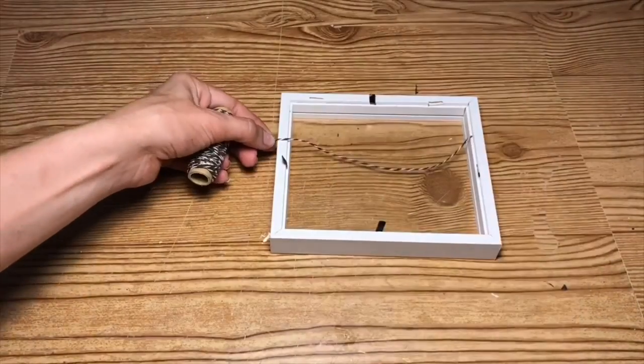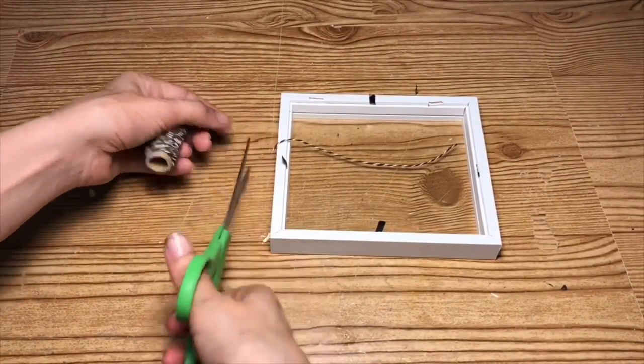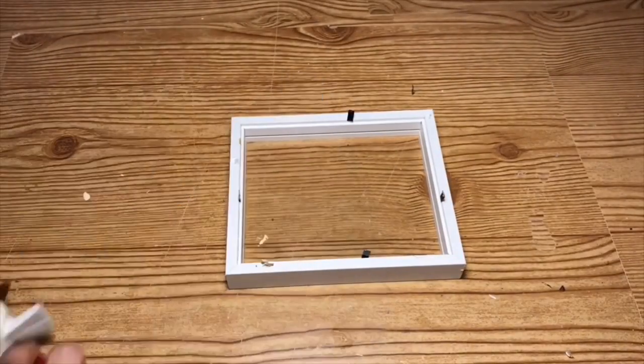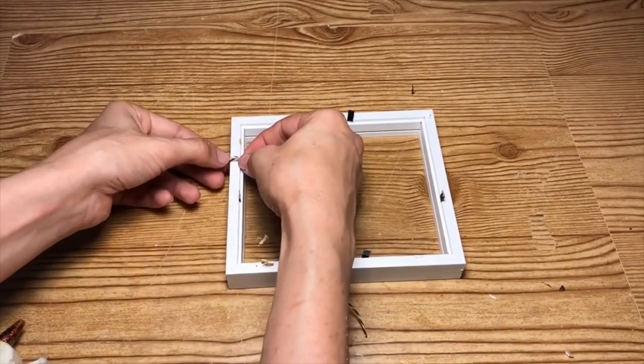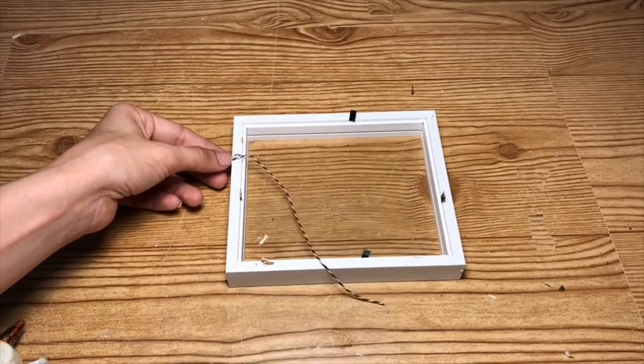Now, I'm just going to take this baker's twine and cut it to the length of the frame. Then I'm going to use the hot glue and apply it to each of the sides of the frames.